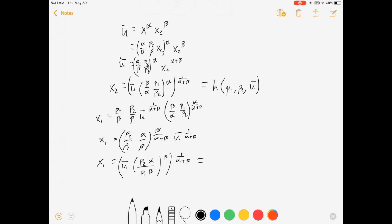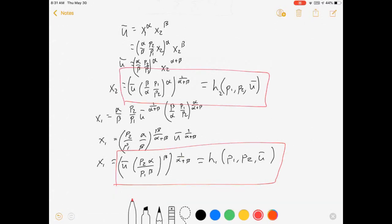Times u bar to the one over alpha plus beta, times P2 alpha over P1 beta to beta, because this is more consistent with how I wrote it the first time. All right. So bear with me on that. This is my Hicksian demand for good 2 was up there and this is my Hicksian demand for good 1. And so there we have it. Hicksian for good 1, Hicksian for good 2.